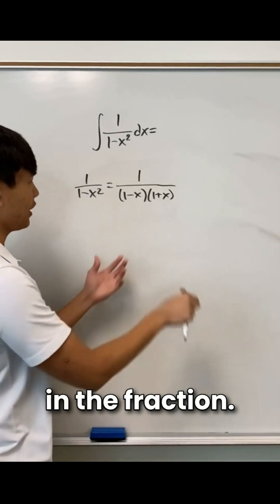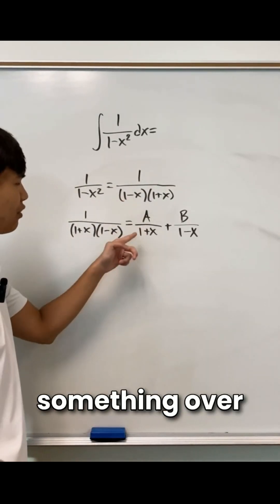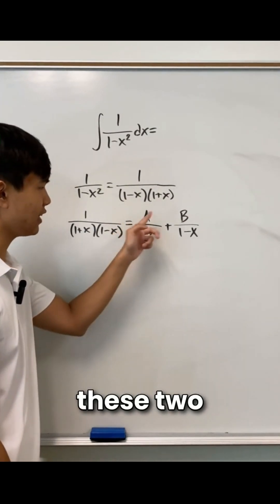I'm going to start by factoring our denominator in the fraction. Then what I'm going to say is that we're going to have this equal to something over 1 plus x plus something else over 1 minus x. And our goal is to find these two somethings.